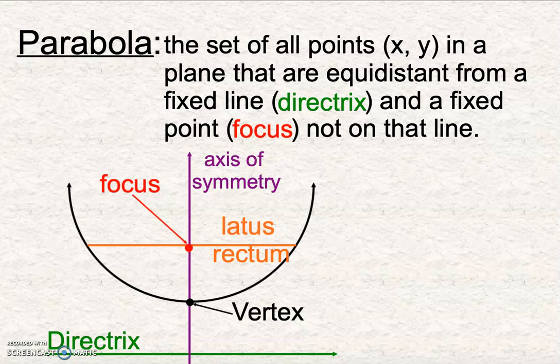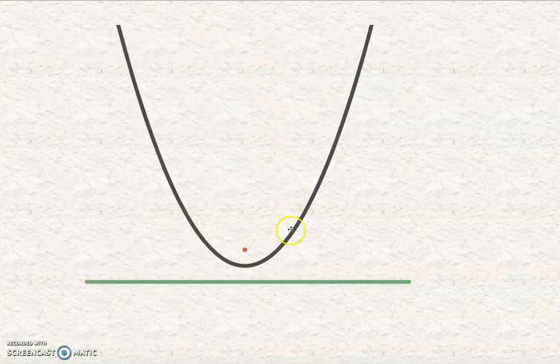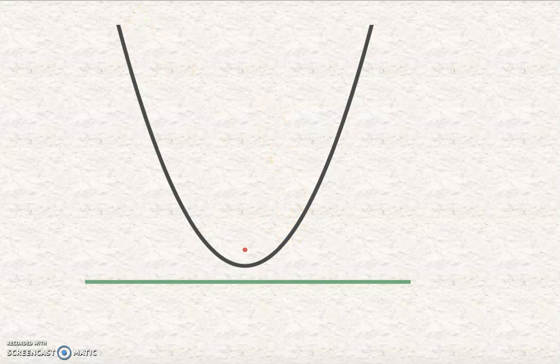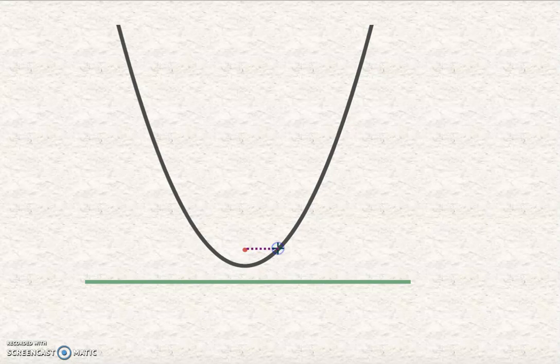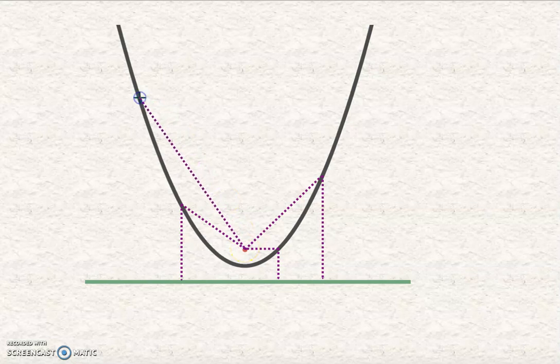So let's talk about parabolas real quickly here. Basically what we know about parabolas is the distance from the focus to the parabola is the exact same as from that parabola down to the directrix. So those two dotted lines there are the same. The distance from the focus to this point on the parabola is the exact same as the distance from the parabola down to the directrix. Every single point on the parabola is equidistant from the focus and the directrix, every single point. So if I go way up here, the distance between this point and that focus is the exact same as the distance between that point and the directrix, every single time.